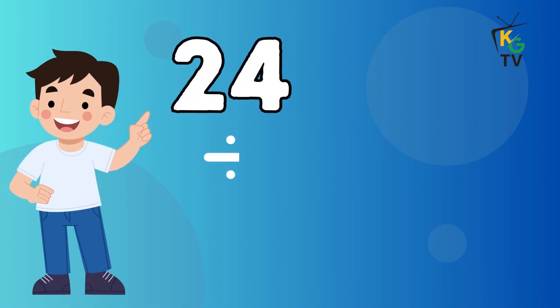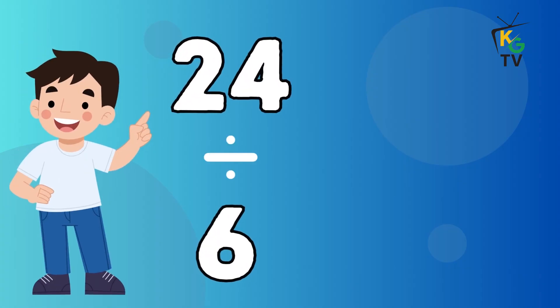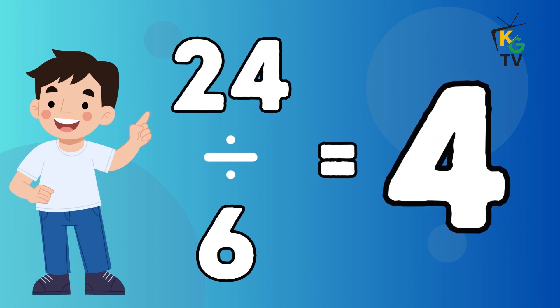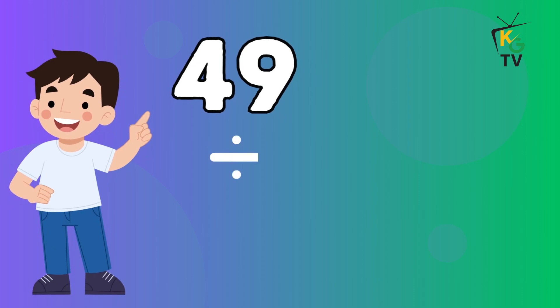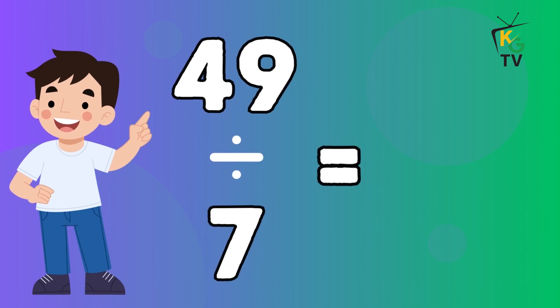24 divided by 6 is equal to 4. 49 divided by 7 is equal to 7.